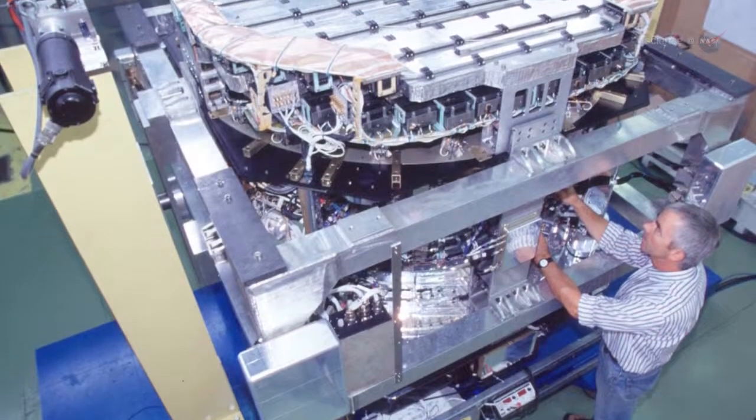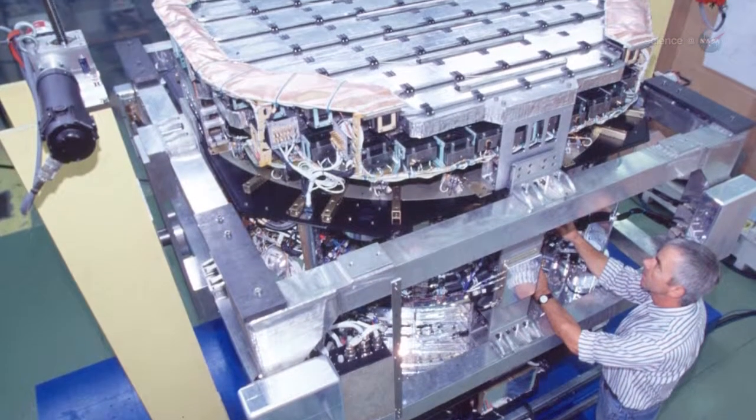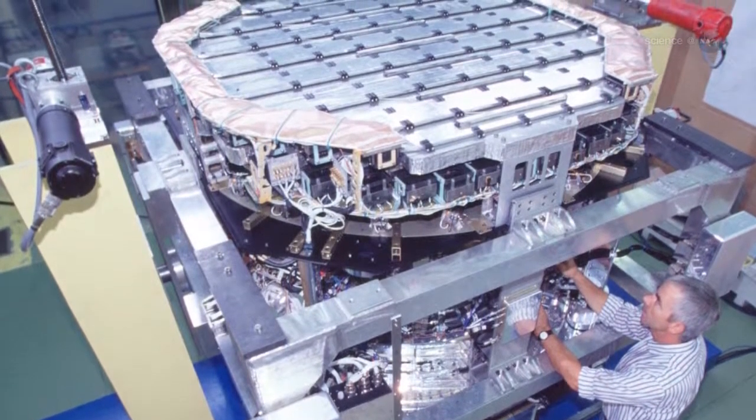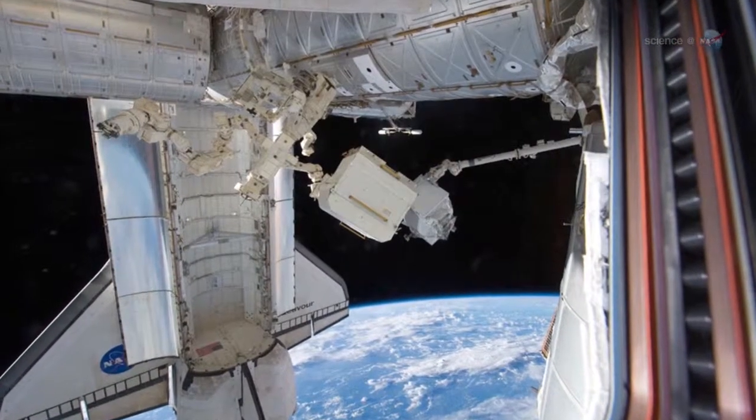The Alpha Magnetic Spectrometer, AMS for short, was delivered to the ISS by the Space Shuttle Endeavour on its final flight in May 2011.